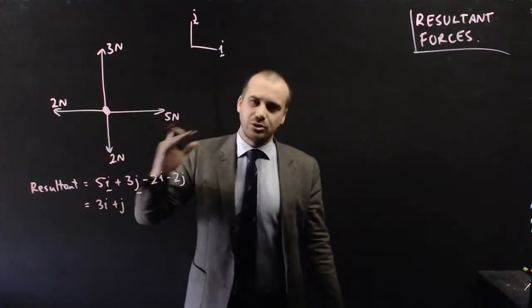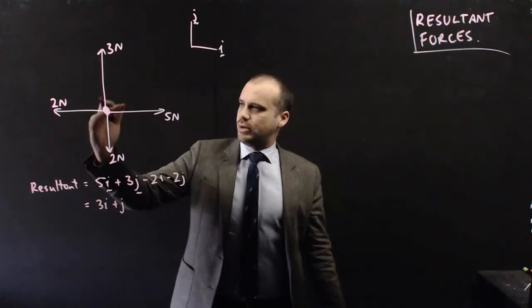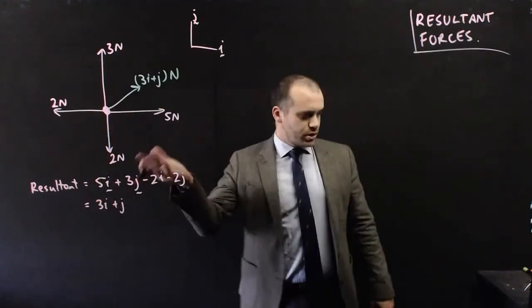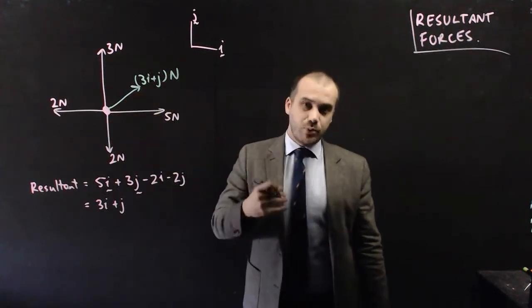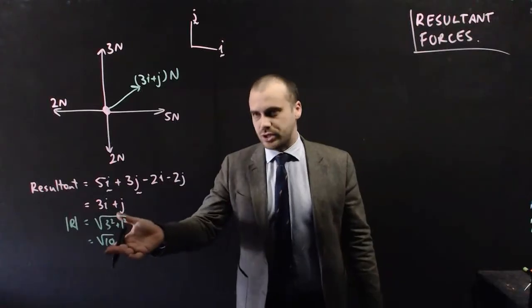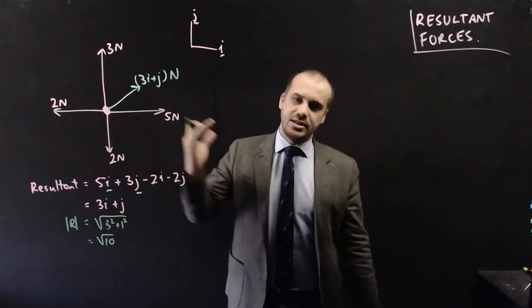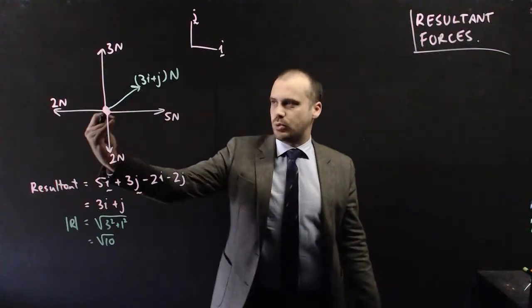There is a force, a resultant force of 3i plus j newtons. 3i plus j, sort of like that. So the resultant vector is 3i plus j newtons. Now, we can also come up with a magnitude for how many newtons there are, just by finding the magnitude of the resultant. So we know that there's root 10 newtons there, about 3 point something newtons is what the force is there.